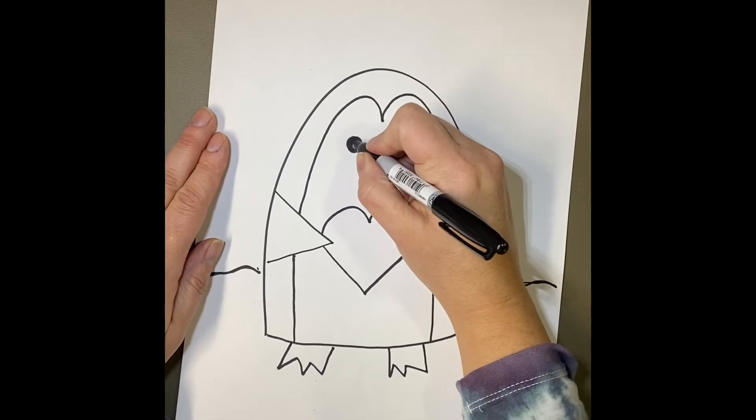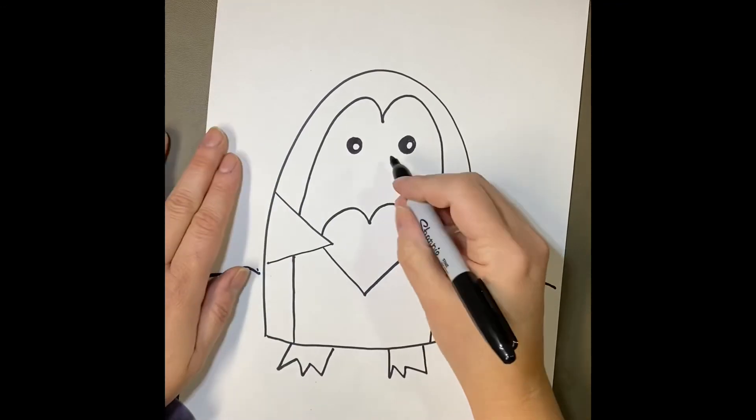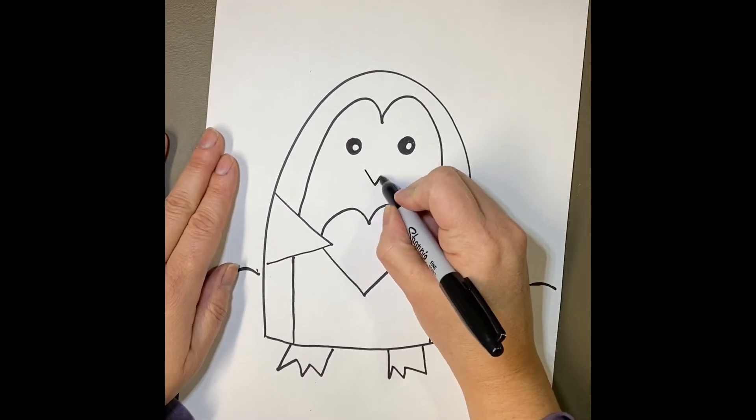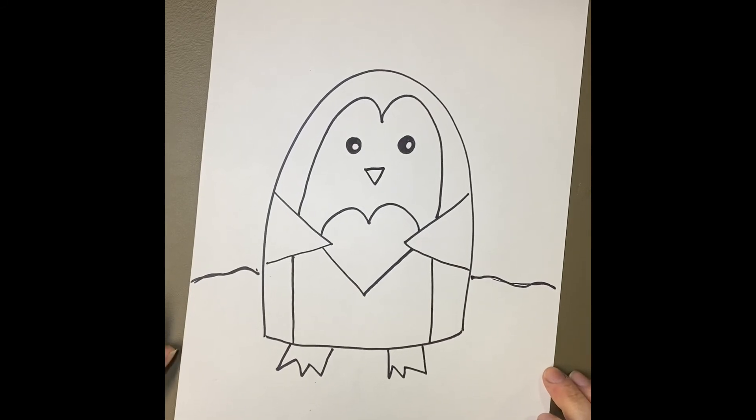My penguin needs a beak, so I'm going to make the letter V and connect it right here. So there's my penguin holding a heart. The next part is going to be adding color.